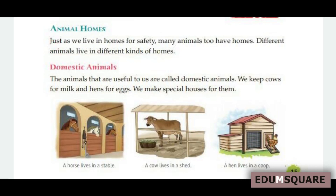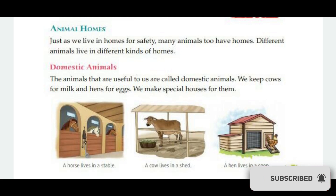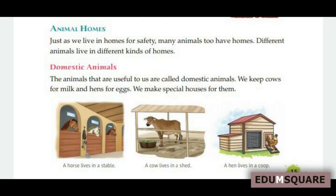Just as we live in homes for safety, many animals also have homes. Different animals live in different kinds of homes. The animals that are useful to us are called domestic animals. We keep cows for milk and hens for eggs. We make special houses for them. A horse lives in a stable, a cow lives in a shed, and a hen lives in a coop.